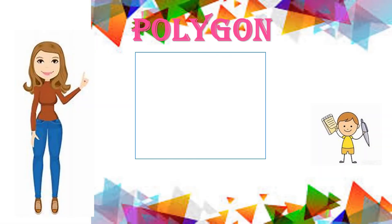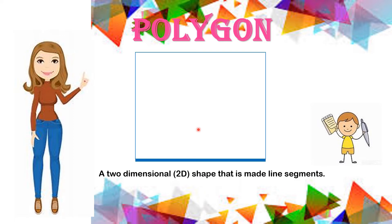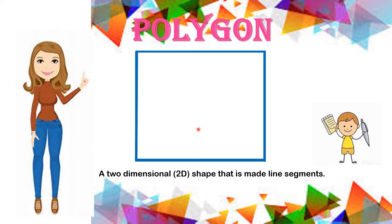A polygon is a two-dimensional or 2D shape that is made up of line segments. These line segments are called the sides of a polygon. The point where the line segments meet is called a vertex.